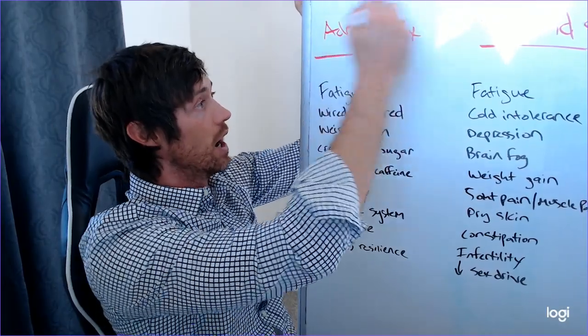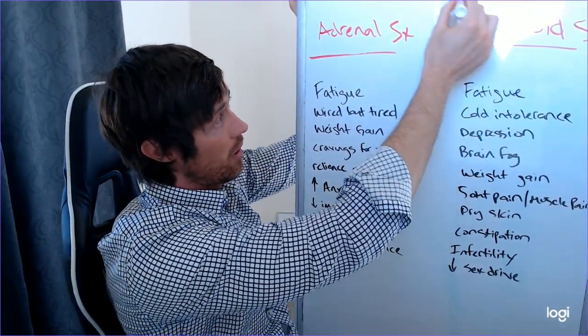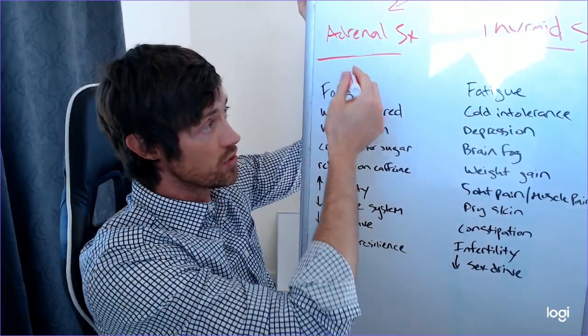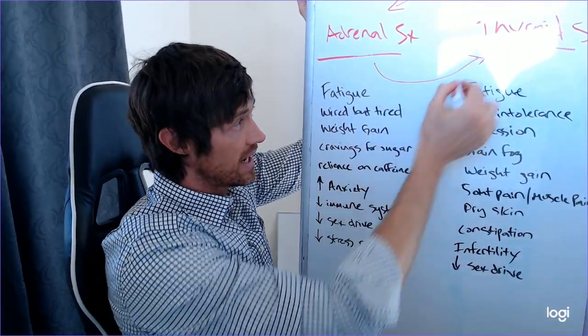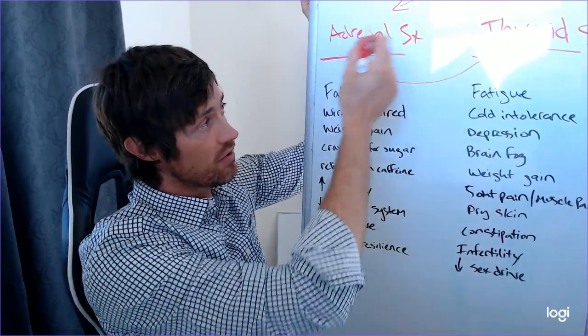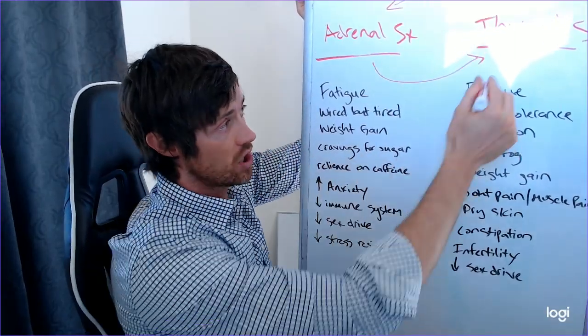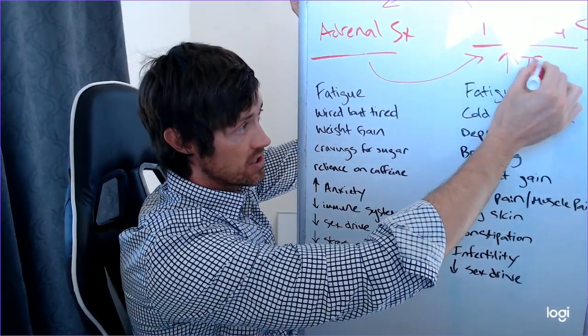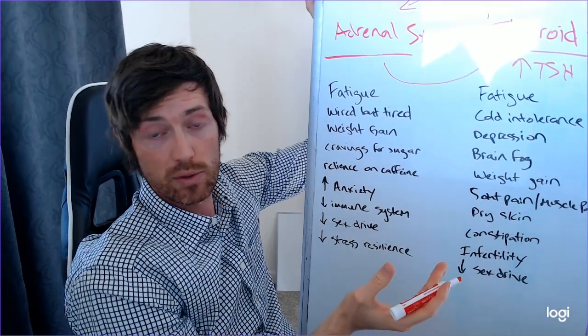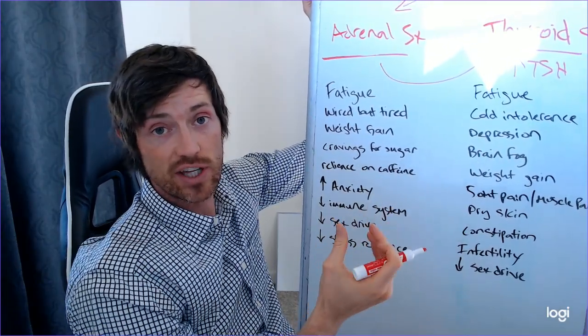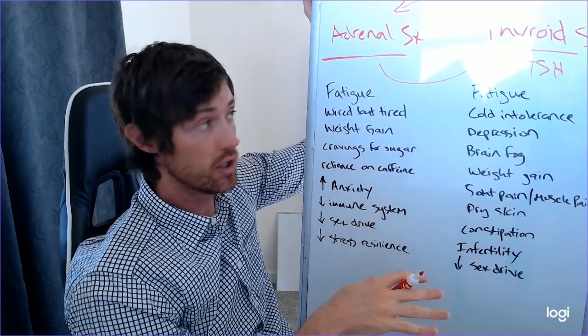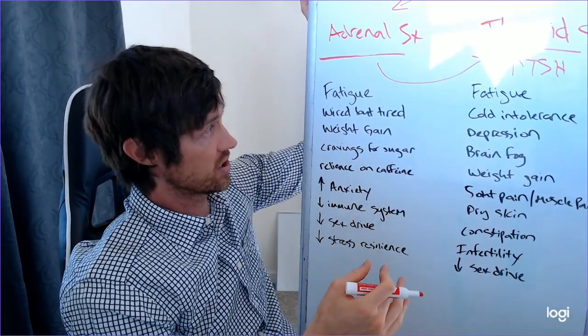If you have a thyroid problem, it will impact your adrenals. But if you have an adrenal problem, it will also negatively impact your thyroid. So they sort of have a relationship here. And we have studies which show that as your TSH increases, which you already probably know if your TSH is going high, that's an indication that you actually have low thyroid function. I know that's a little bit confusing, but that's actually how it works.